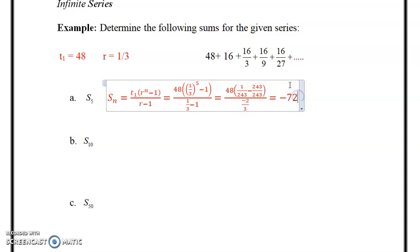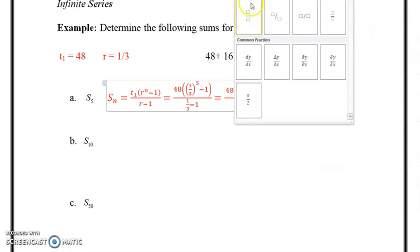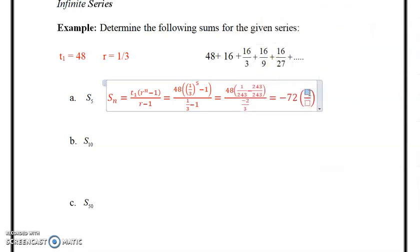So I took the 48 and I divided it by the negative there, and then that's going to be multiplied by, in brackets, that's going to be multiplied by negative 242 over 243. I subtract numerator, remember I multiplied there, and I get that is equal to—